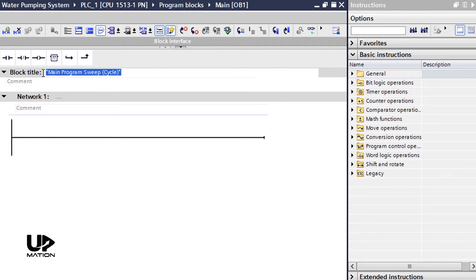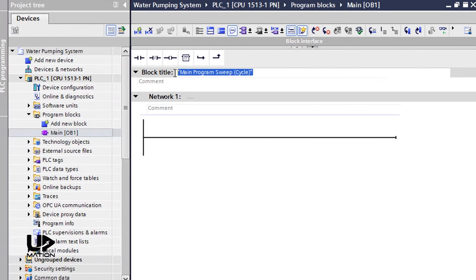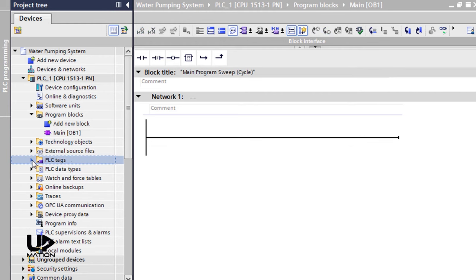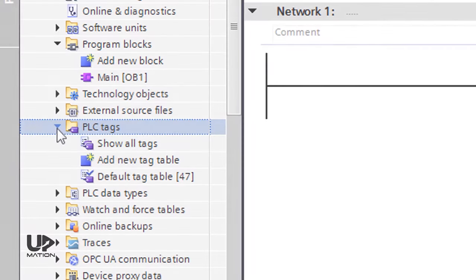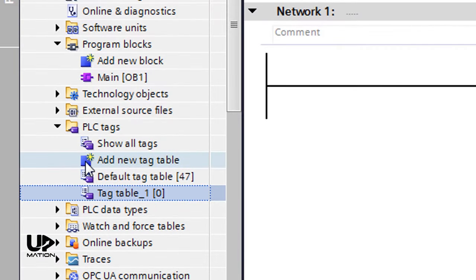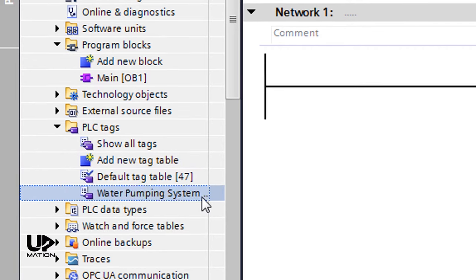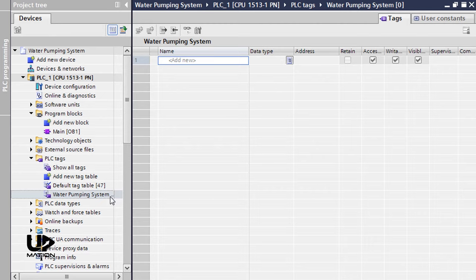Before writing anything within the OB1 environment, we should add the inputs and outputs of the project and their addresses in the tag table here under the PLC tags folder. I will create a new tag table and name it as Water Pumping System. I then open it up by double-clicking on it.